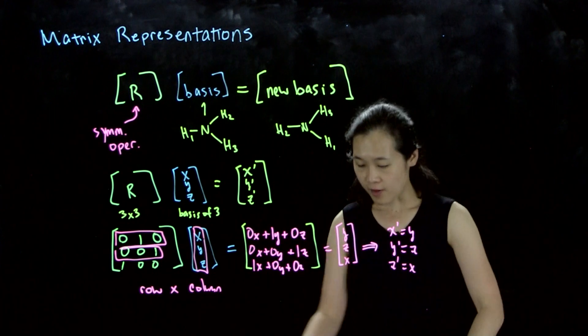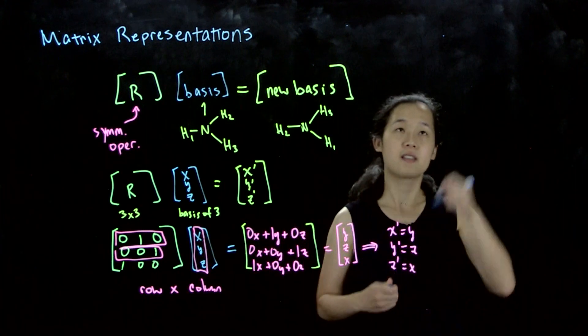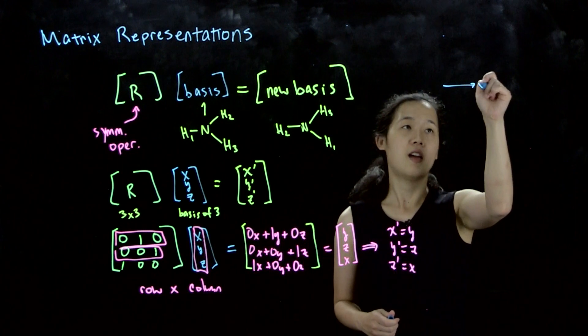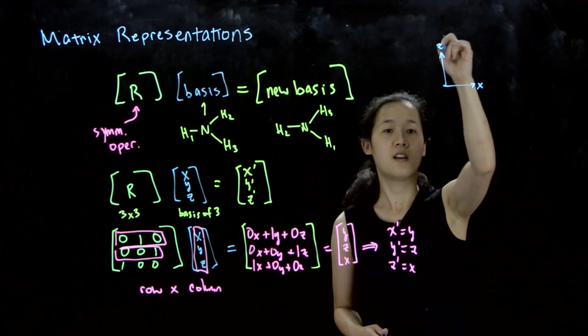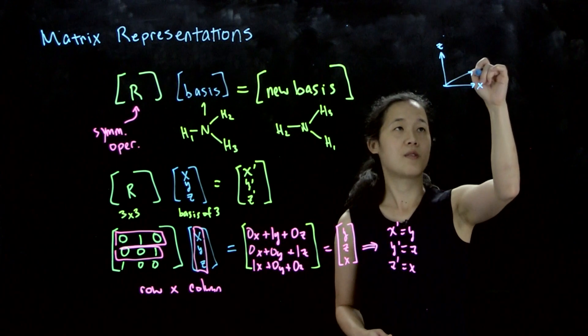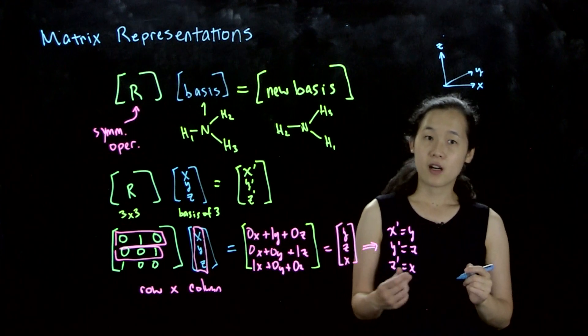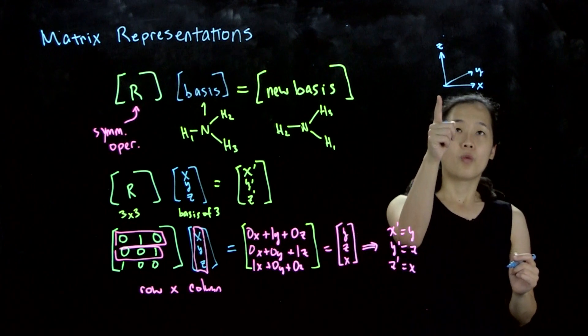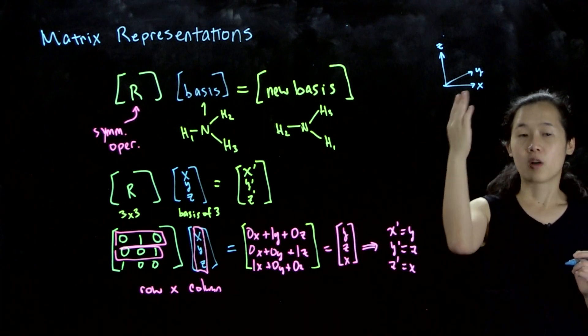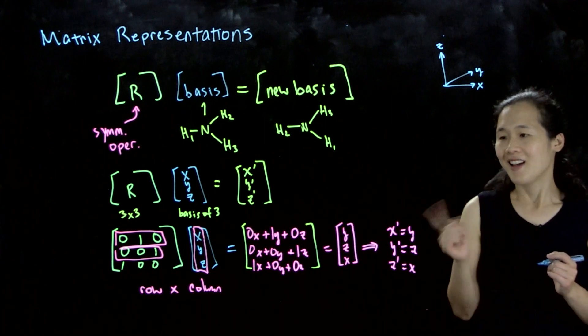To look at how x, y, and z transform, let's first define our coordinate system. Our original basis is going to be x going to the right, z going up, and y going into the back. We want to figure out how these turn into the new coordinates once we do the symmetry operation.